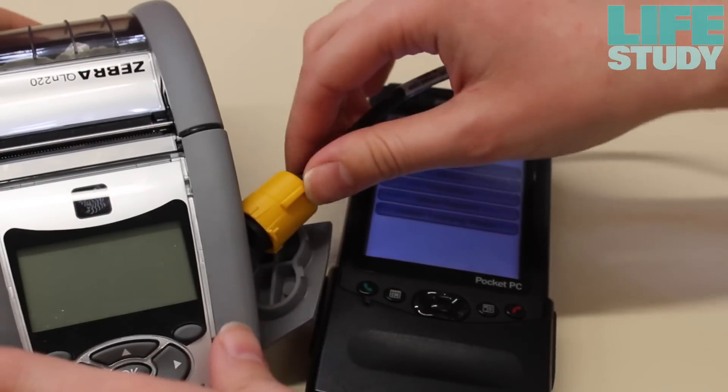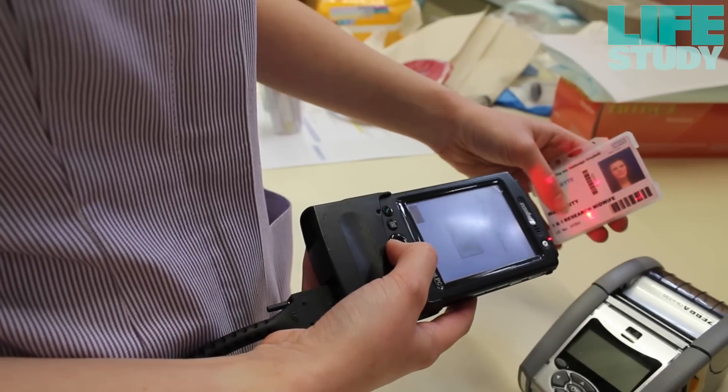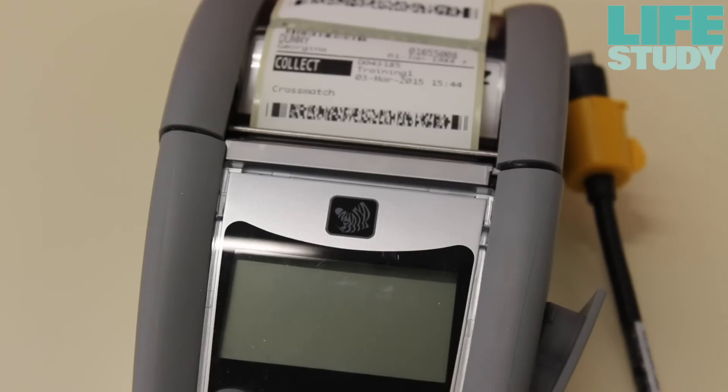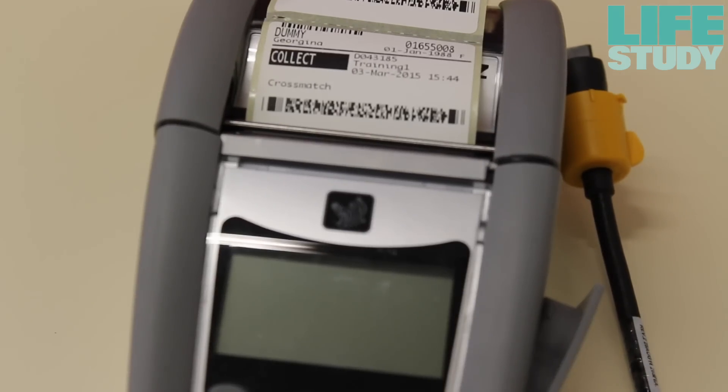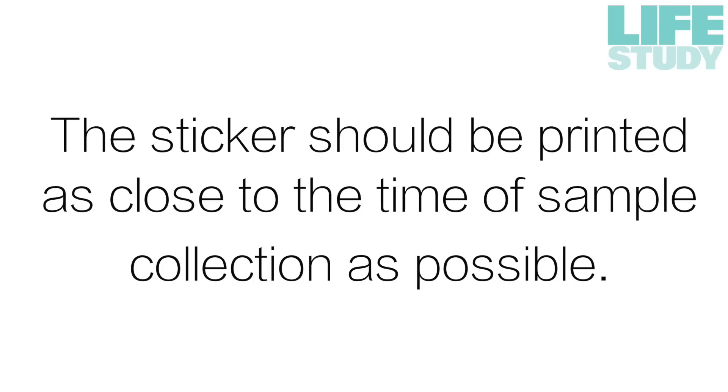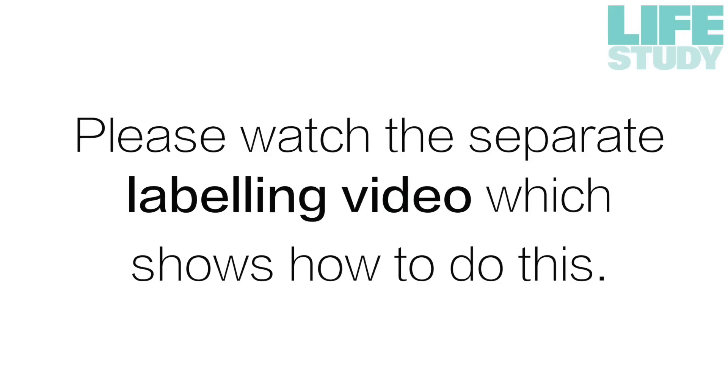Before handing the kit to the woman for self-collection, or before collecting the sample if done by her midwife, you should print the woman's Life Study sticker and place it on the specimen collection tube. The sticker should be printed as close to the time of sample collection as possible. Please watch the separate labelling video which shows how to do this.